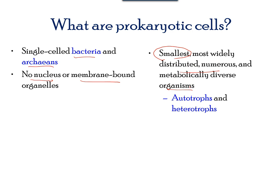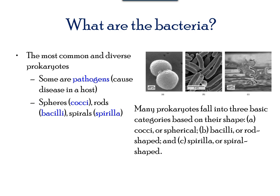The domain bacteria includes cells that can be characterized into three shapes, which also divide the bacterial domain into three subgroups. Cocci are circular-shaped bacteria, plural cocci. Rod-shaped bacteria are called bacillus, plural bacilli. The third group includes spiral-shaped bacteria.